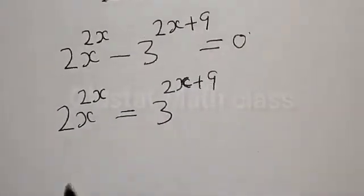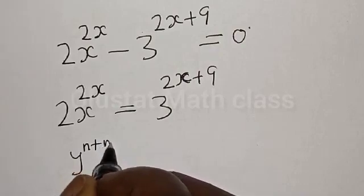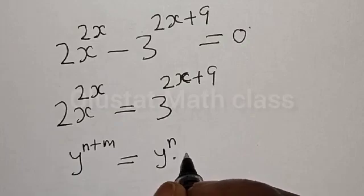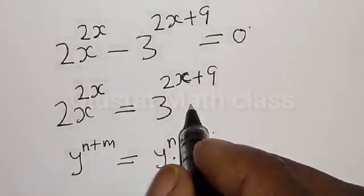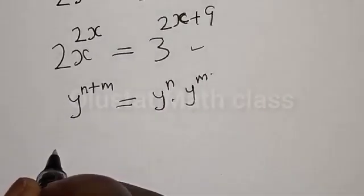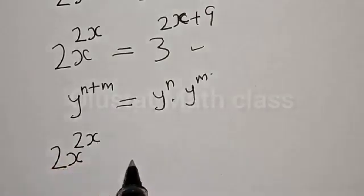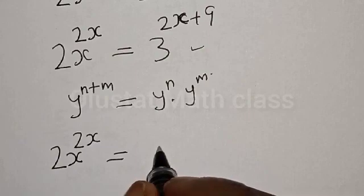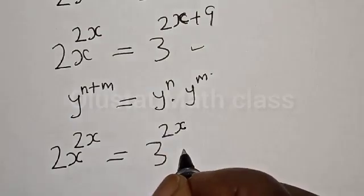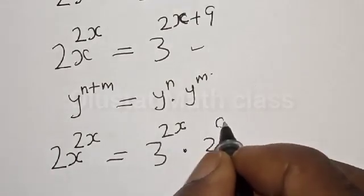Now remember that if you have y raised to power n plus m, it is the same thing as y raised to power n multiplied by y raised to power m. Then let's write the right-hand side: we have 2s raised to power 2x is equal to 3 raised to power 2x multiplied by 3 raised to power 9.